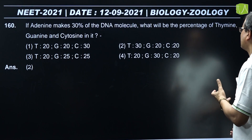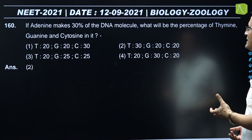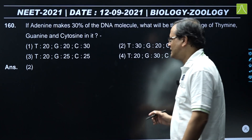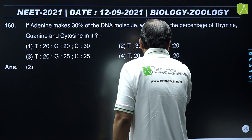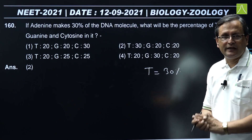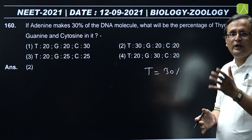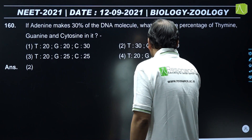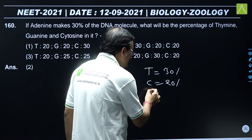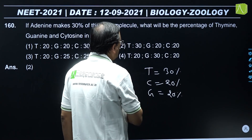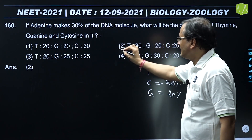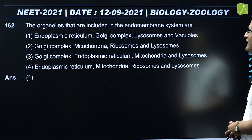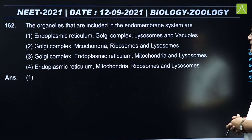Question 160: If adenine makes up 30% of a DNA molecule, what will be the percentage of thymine, guanine, and cytosine? Adenine is 30%, and since adenine pairs with thymine, thymine is also 30%. Together that is 60%, so the remaining 40% is split equally: 20% cytosine and 20% guanine. Based on this analysis, the correct answer is option 2.